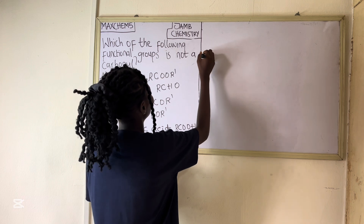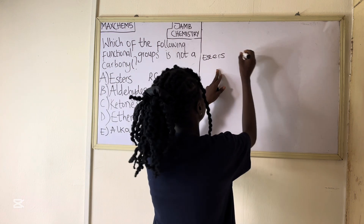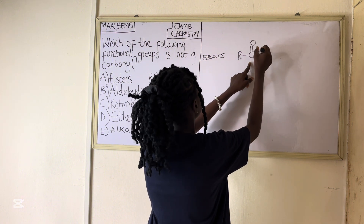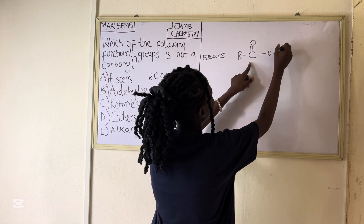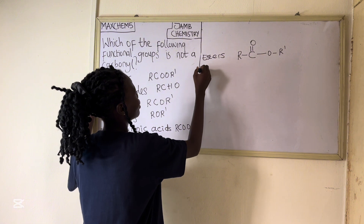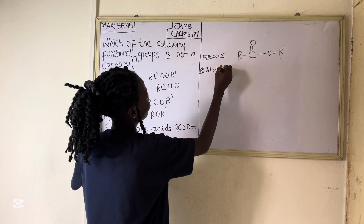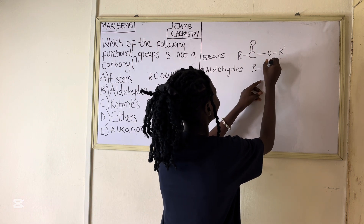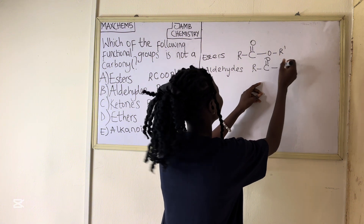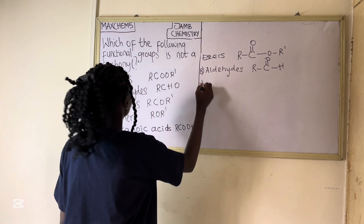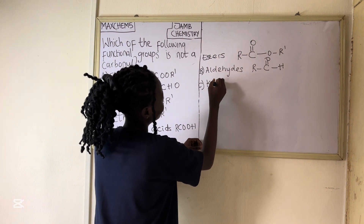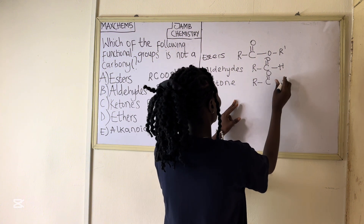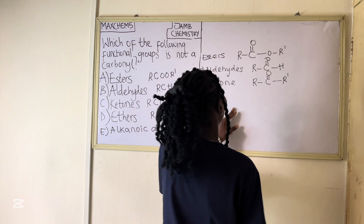Now let us write these general formulas in structural form. For esters: R bonded to C, with C double bonded to O, then O bonded to R'. For aldehyde: R bonded to C, with C double bonded to O, and bonded to H. For ketone: R bonded to C, with C double bonded to O, and bonded to R'.